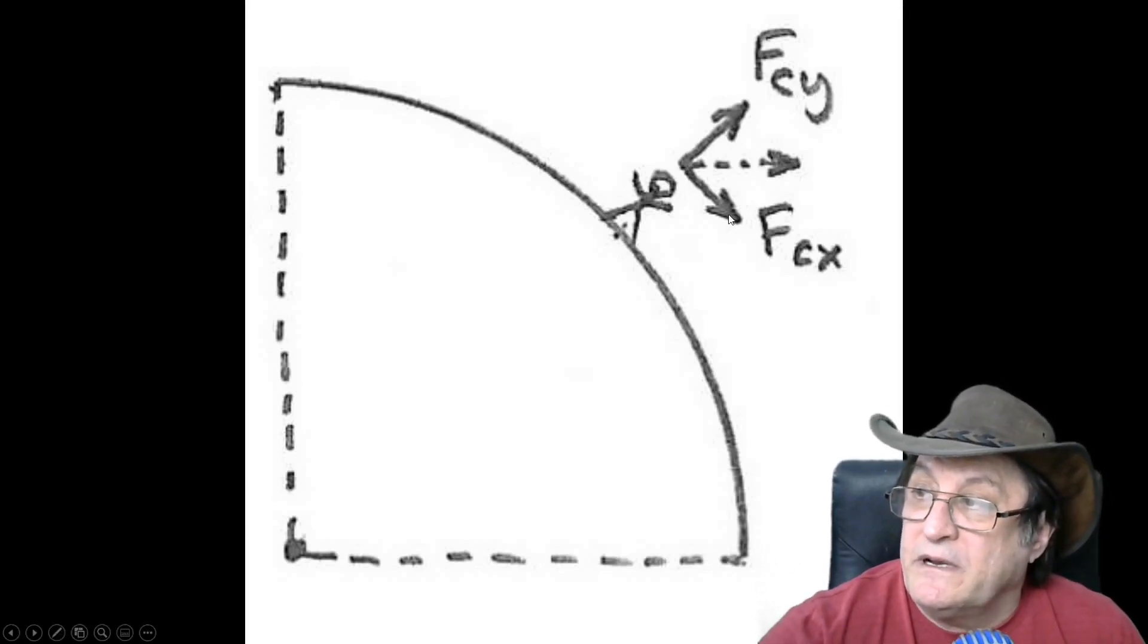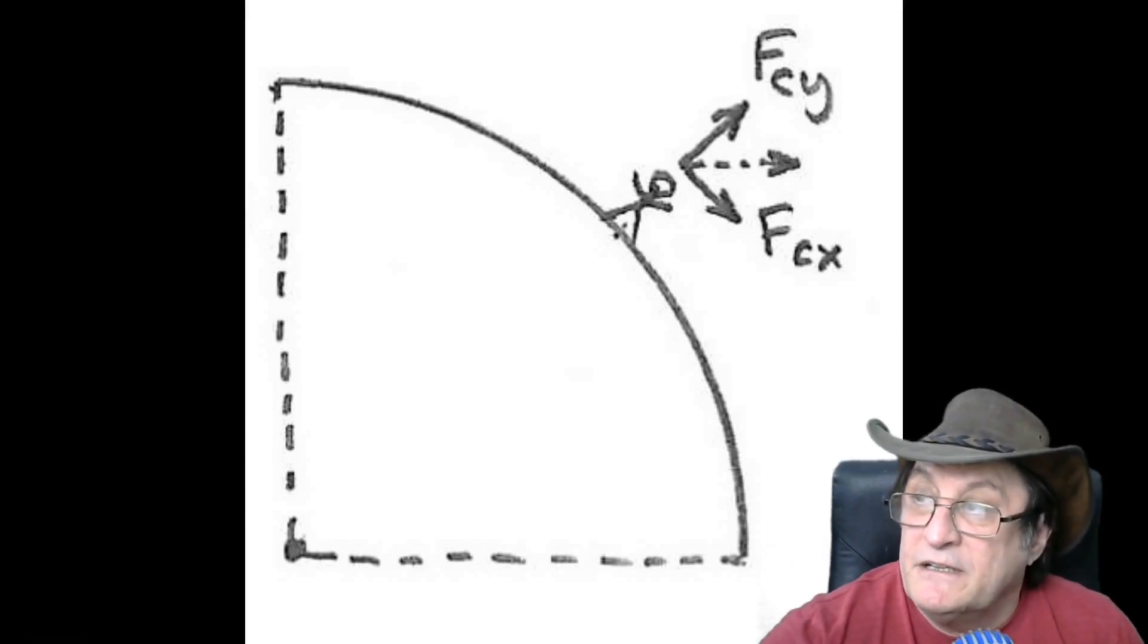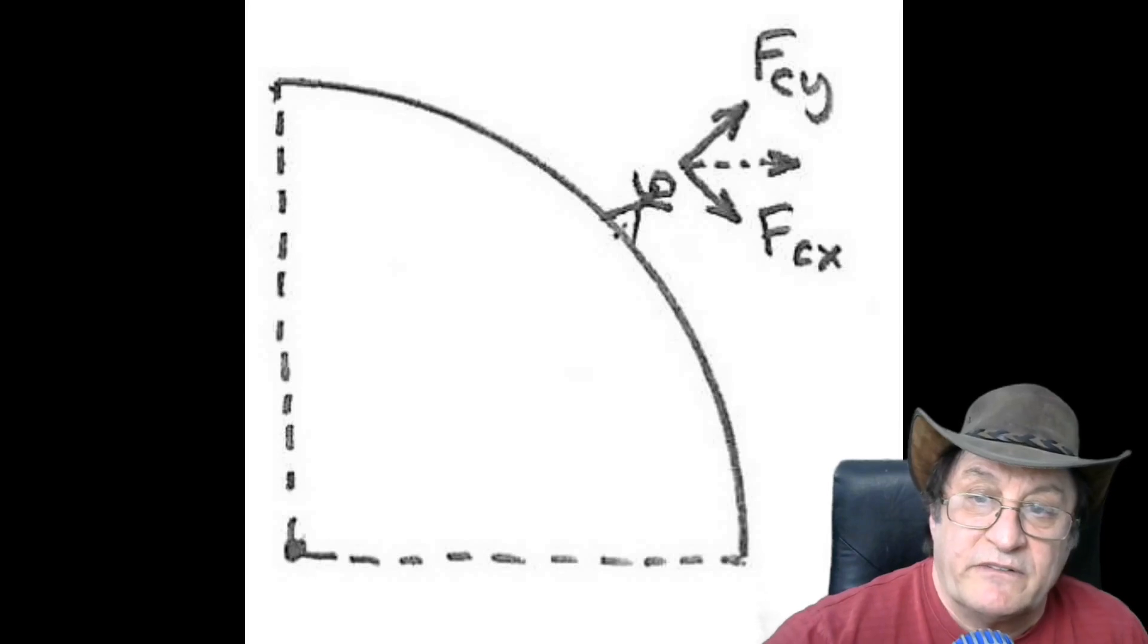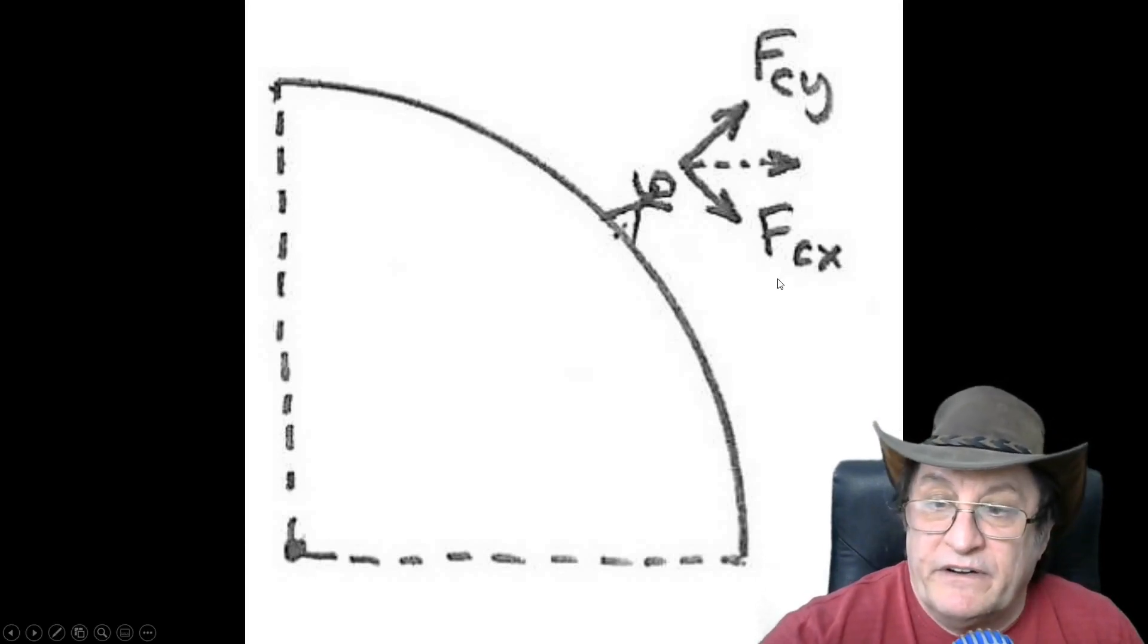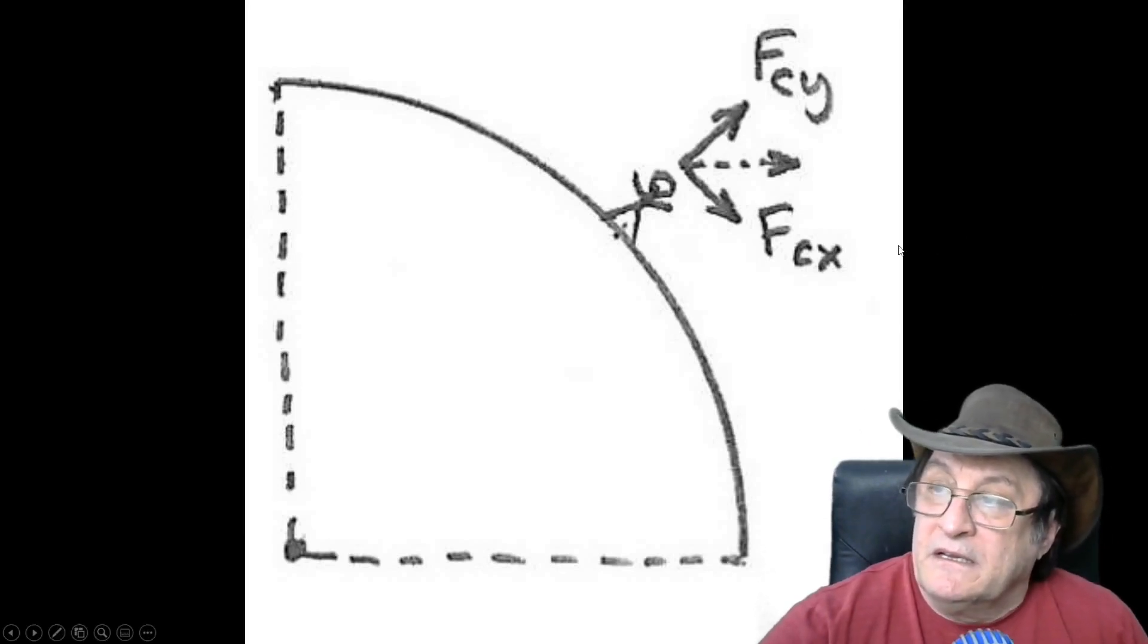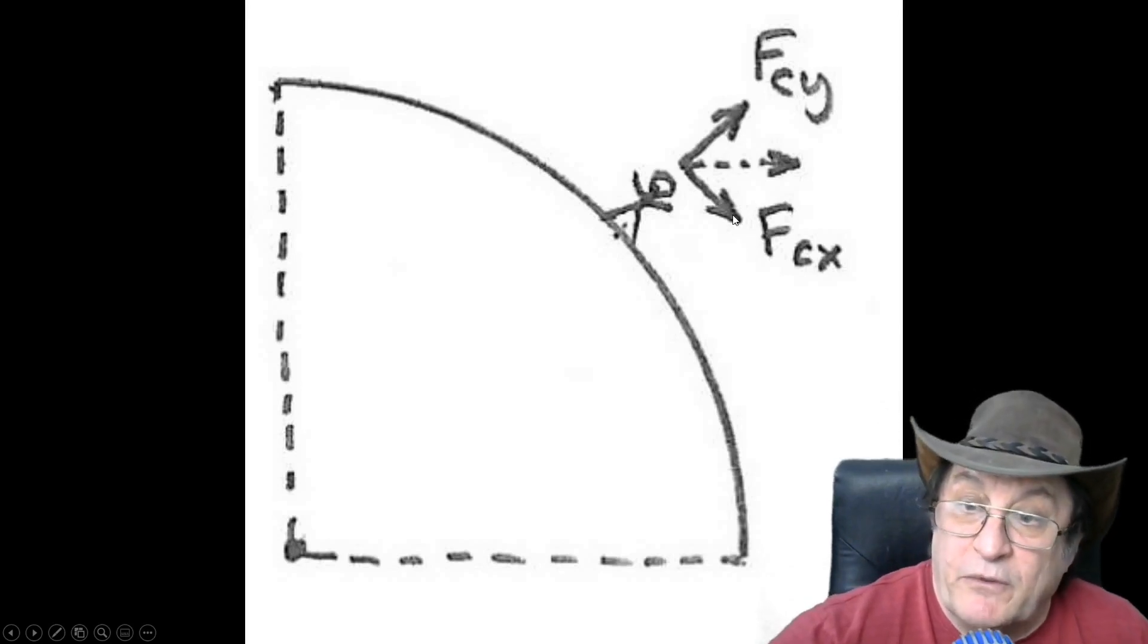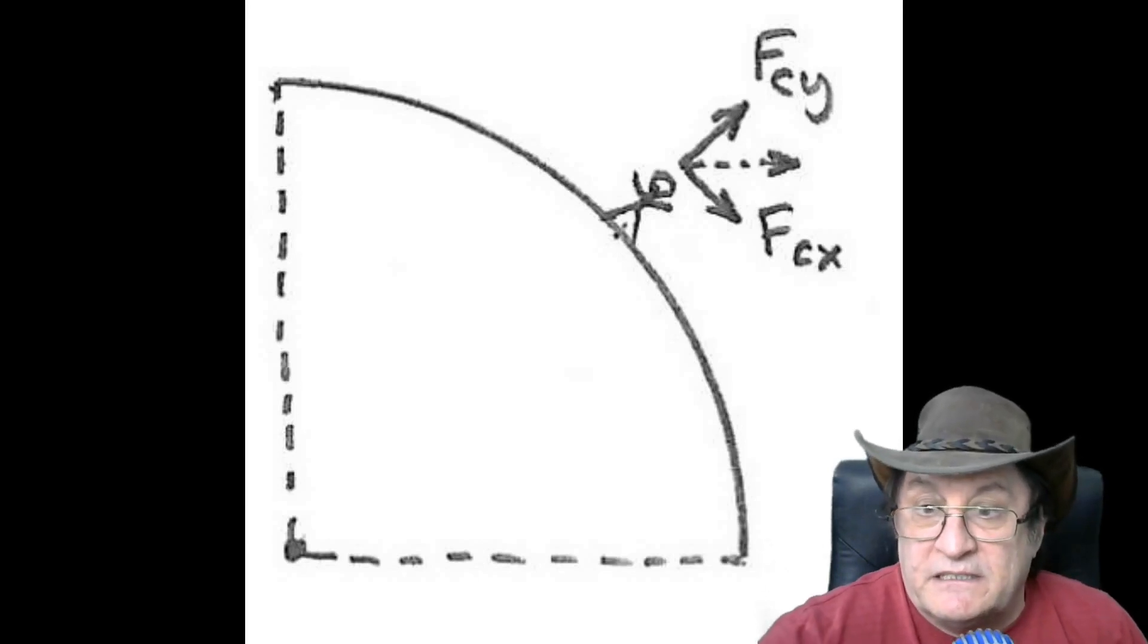Now this one here, the tangential component, is virtually impossible to measure. Because in order to measure that, you have to determine the vector to the center of gravity. And very, very difficult. You cannot separate the forces that way. So that's pretty much impossible.